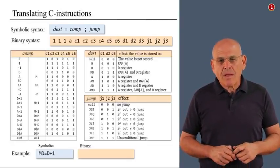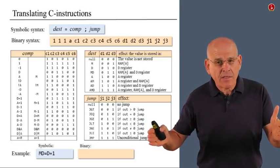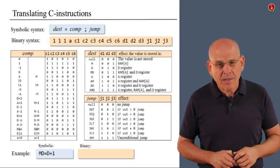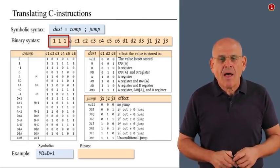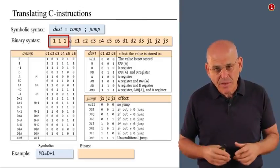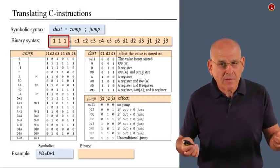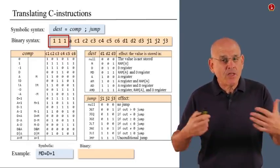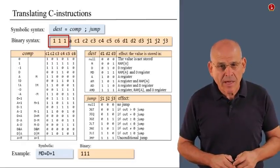So, let us begin to put together the string of characters that will end up representing the binary code of MD equals D plus 1. We can do it in many different ways, and here is one of them. Focusing on the target expression, we see that every C instruction begins with three ones when it comes to the binary flavor of C instructions. So we initialize the string that we are building with three ones. That's what we do when we get started.